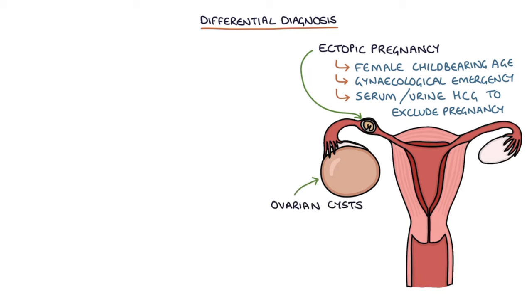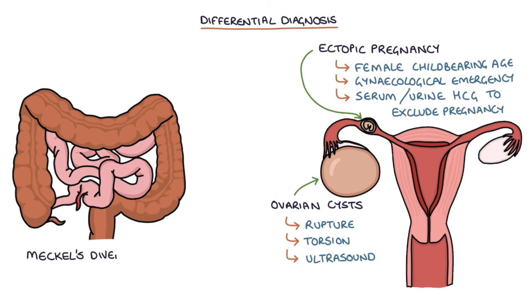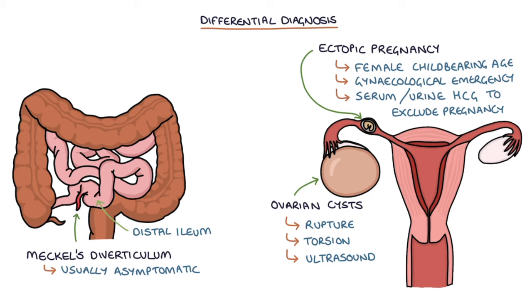Ovarian cysts are another differential and can cause pelvic and iliac fossa pain, particularly when they rupture or there's torsion. Ovarian cysts can be investigated with an ultrasound of the pelvis. Another differential is Meckel's diverticulum, a malformation of the distal ileum that occurs in approximately 2% of the population. It's usually asymptomatic and does not require any treatment. However, it can bleed, become inflamed, rupture, or cause a volvulus or intussusception.